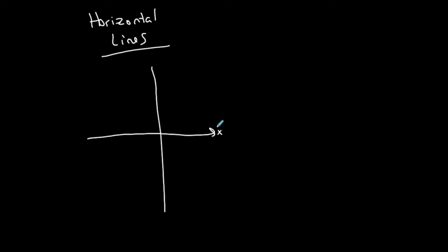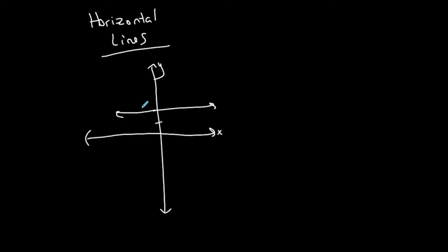If I have a line that is horizontal, this is what it looks like. Here's a line that is horizontal at y equals 2. What's the equation of this line? Notice that at any point on this line, the y-coordinate is always 2. I don't care what the x-coordinate is — any point on this line, the y-coordinate is always equal to 2. So the equation of this line is simply y equals 2.